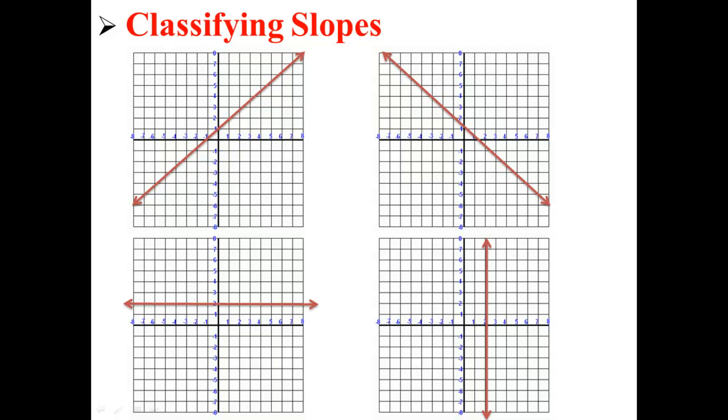Here, we have four different lines graphed on four different coordinate planes. These lines all have different slopes, and we can actually classify them.